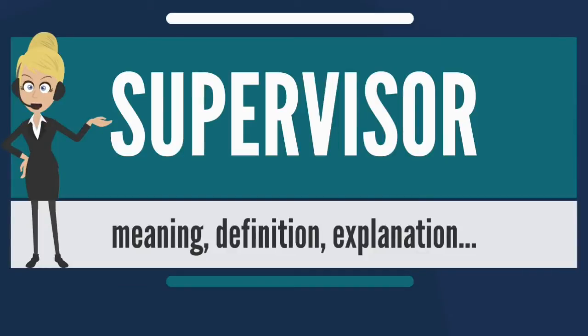An employee is a supervisor if he has the power and authority to do the following actions, according to the Ontario Ministry of Labour: 1. Give instructions and/or orders to subordinates.